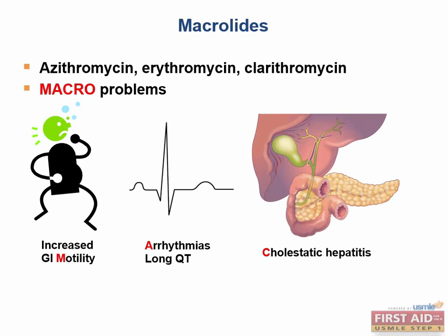Another side effect is acute cholestatic hepatitis. Cholestatic means stasis or decreased movement of bile through the biliary tree. Bile is produced in the liver and stored in the gallbladder. Macrolides reduce the flow through the biliary pathway, leading to a buildup of bile in the liver and causing inflammation — hence, cholestatic hepatitis.